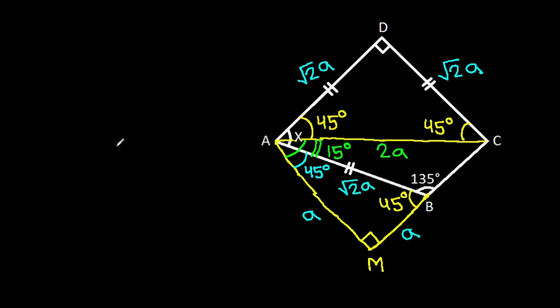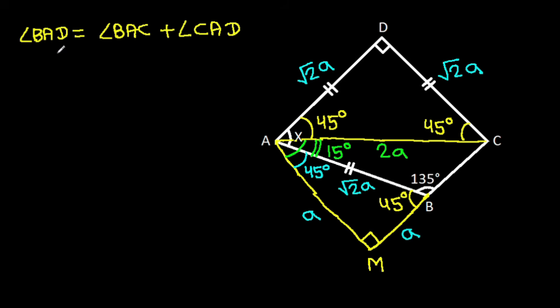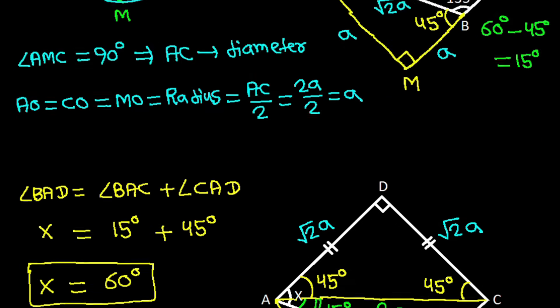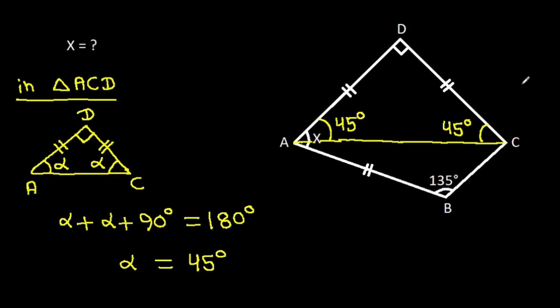Angle BAD equals angle BAC plus angle CAD, which is 15 degrees plus 45 degrees. Since angle BAD is X, we get X equals 60 degrees.